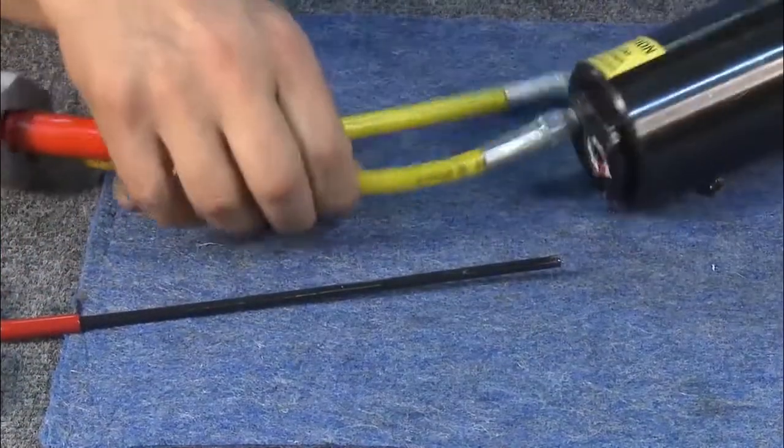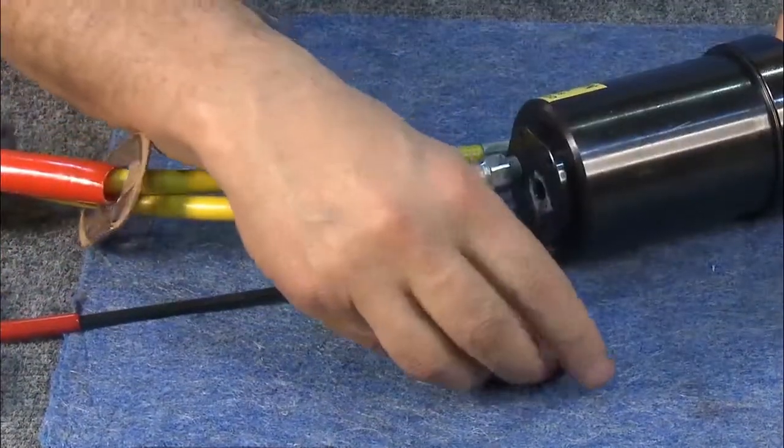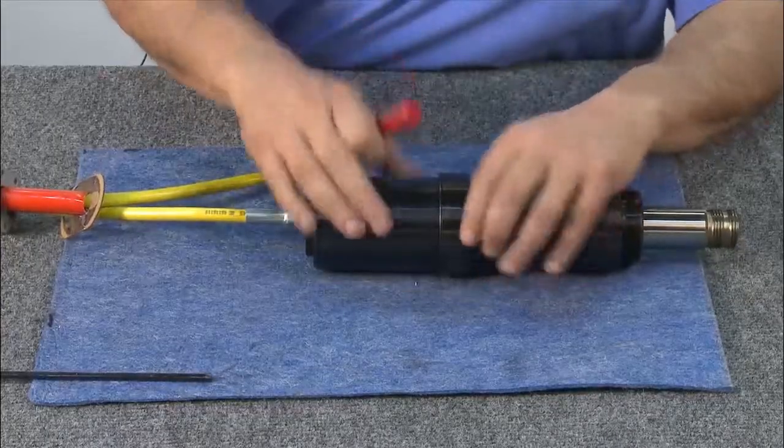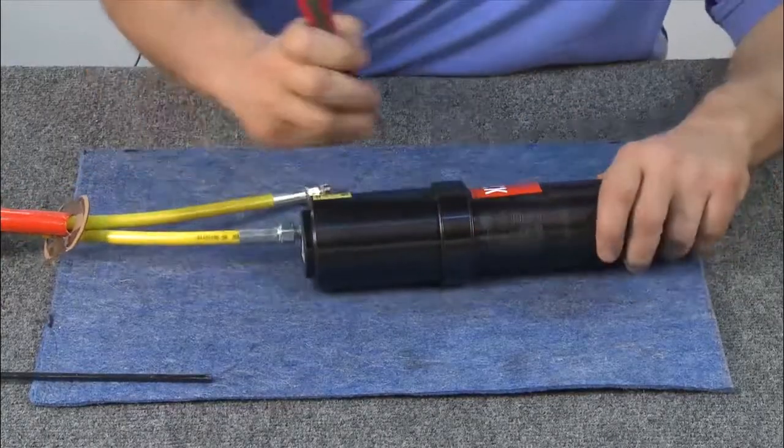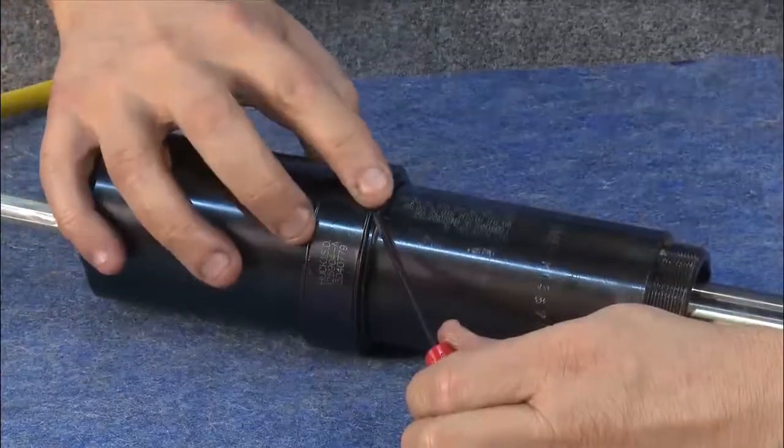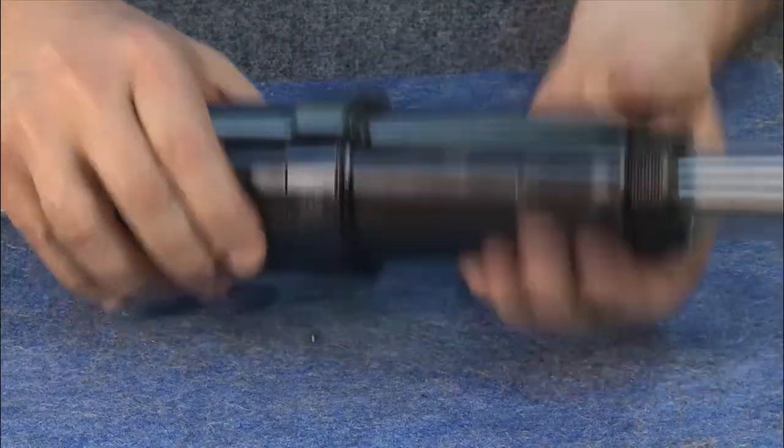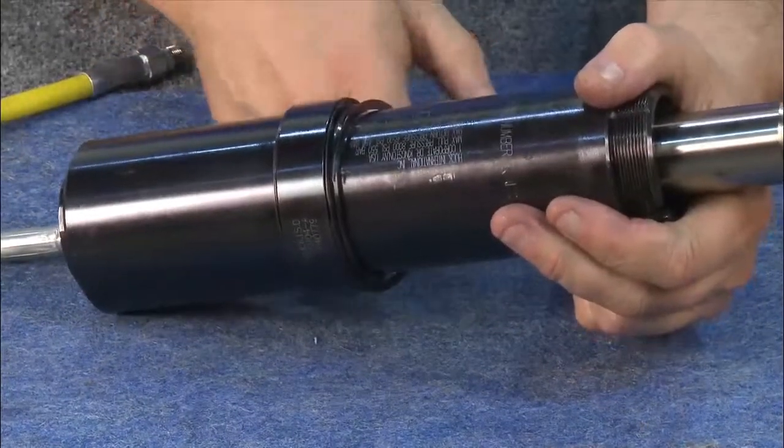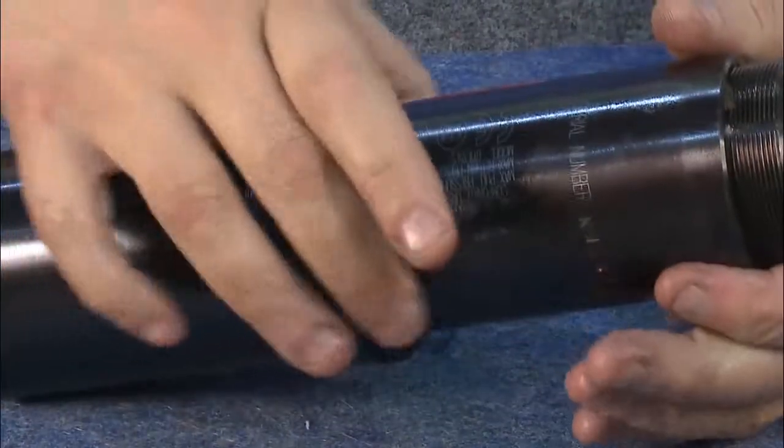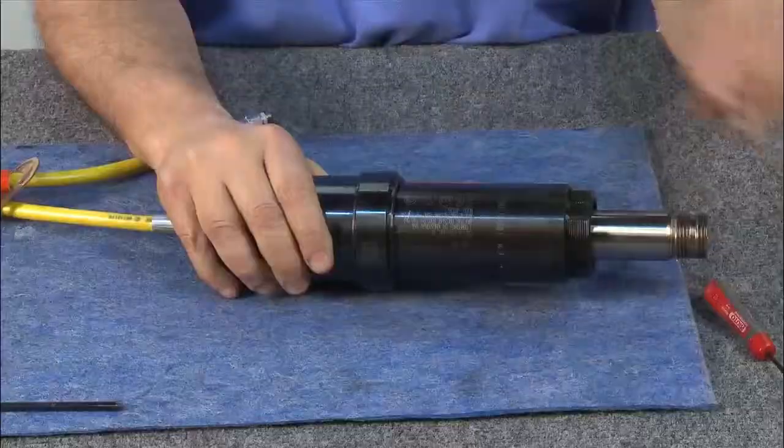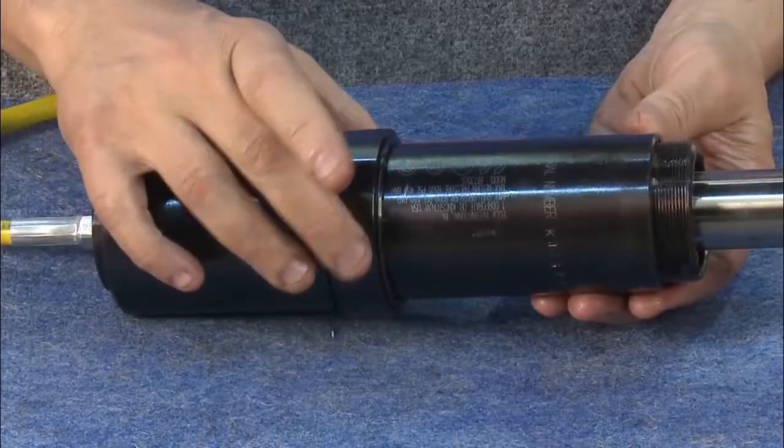The BTT35LS features twin pistons. Now we need to remove the shroud so that you have easy access to the rear piston. First, remove the spiral lock retaining ring. Next, slide off the sleeve.